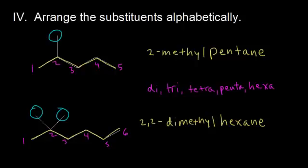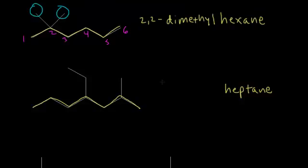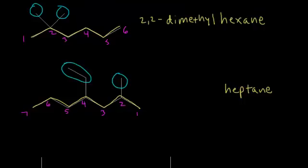Let's do another nomenclature example. Find the longest carbon chain — counting gives us seven carbons, so heptane. Numbering from the right gives the first substituent a number of two, which is lower than starting from the left. Identify your substituents: there's a methyl group coming off of carbon two and an ethyl group coming off of carbon four.